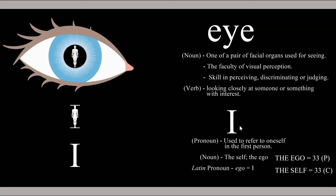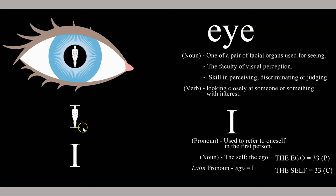'I' is the ninth letter of the English alphabet. 'I' is also considered a word when used as a pronoun to refer to oneself in the first person — the first person, or first individual, being God. God is the first point of reference for the individual, the standard for the individual.